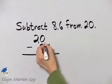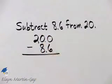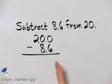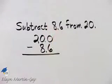Now if you need to, go ahead and place a decimal point and a zero there. And then again, remember we subtract as for whole numbers, but notice I did line up decimal points because that's how we subtract decimal numbers.